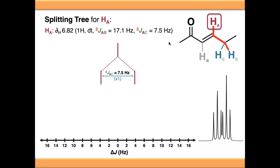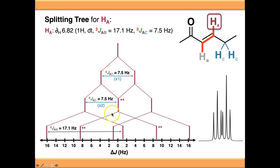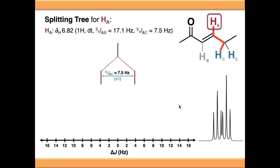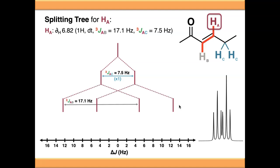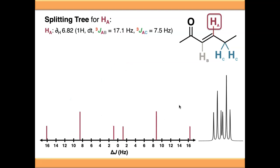If we start with the couplings to HC first - the first one, then the second one - this gives us a triplet at this stage. So if HB wasn't here, proton A would give us a triplet because it's coupling to the two equivalent protons C. But HB is here, so let's do the final coupling to HB, splitting all of these signals by 17.1 Hz, remembering that any signals that are twice as intense need to be reflected in the final product. The final signal looks exactly the same as before. And just to really prove the point, if we do the signals in a really weird order - one HC, then HB, then the other HC - the signal from our splitting tree is once again exactly the same.